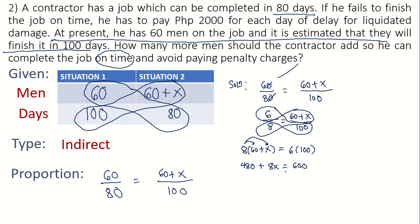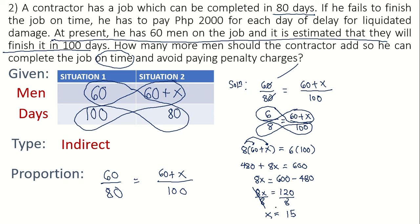To solve for X, transfer 480 to the other side: 8X equals 600 minus 480, which is 120. Dividing both sides by 8, X equals 15. So what is this 15? It represents 15 men.